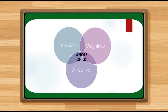This is the illustration of how the three processes are interrelated and intertwined with each other — the whole child, involving the three processes or factors: the physical, cognitive, and affective. We are now done with the different principles of human development, so let's proceed with the different approaches to human development.